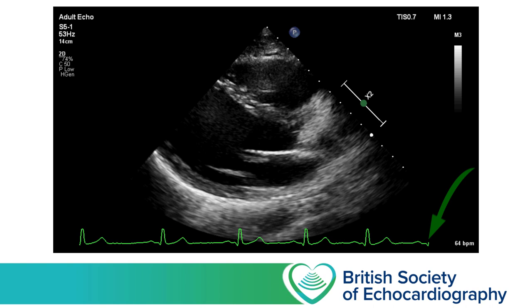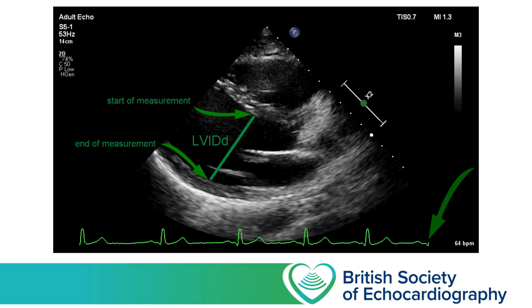The mitral valve leaflets should just be starting to close with the onset of systole, and the aortic valve must clearly be closed. We need to imagine a line running perpendicular to the LV walls, just beyond the leaflet tips of the mitral valve — this is where we make our measurement. The measurement should be made from the internal border of the LV cavity, from the intraventricular septum down to the infralateral wall.